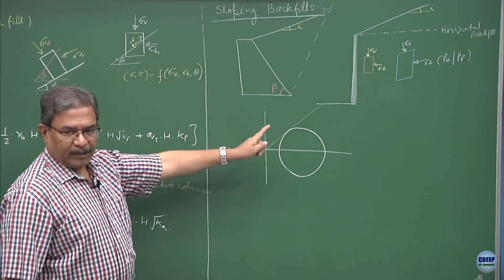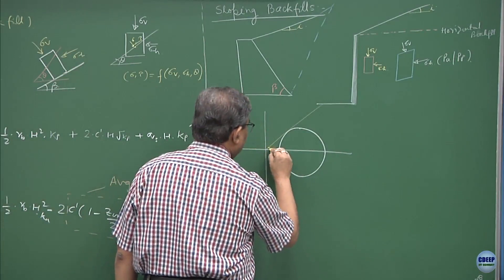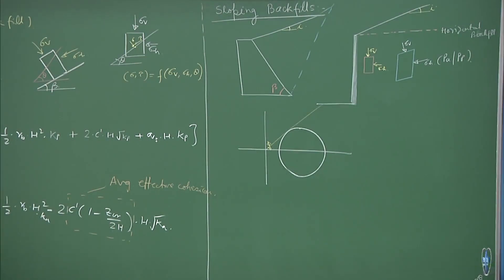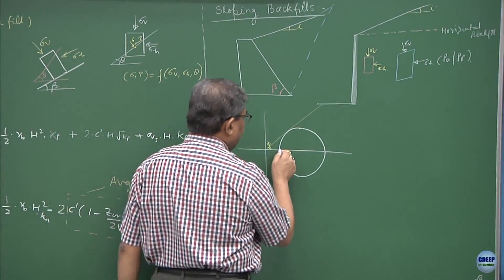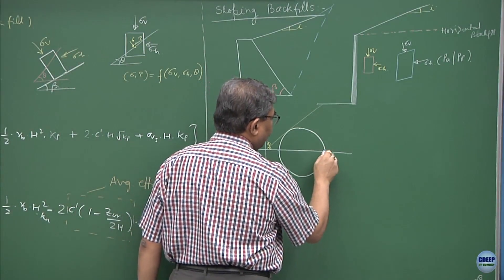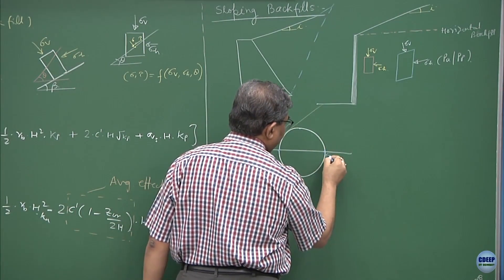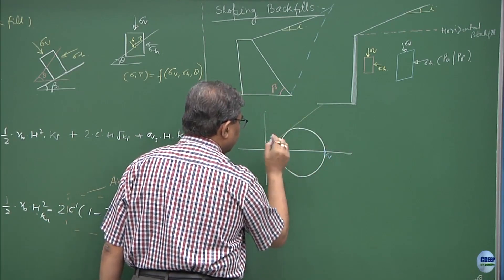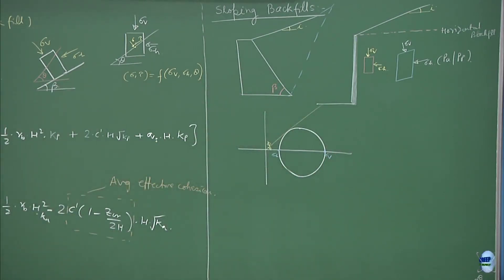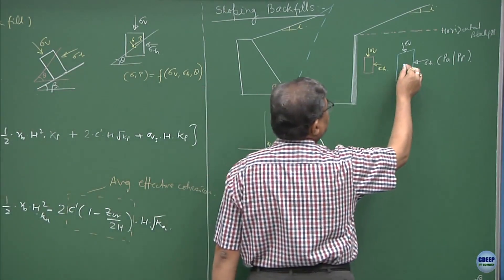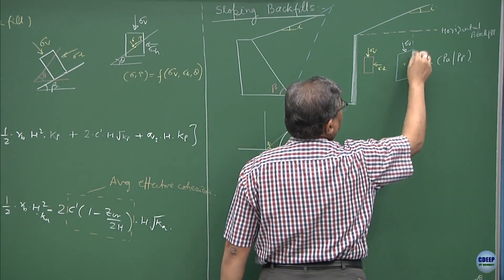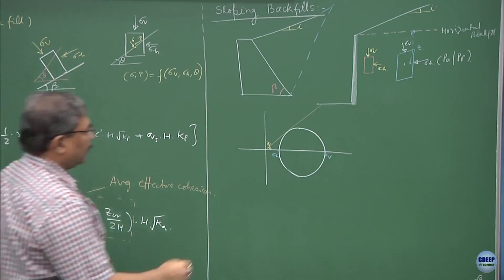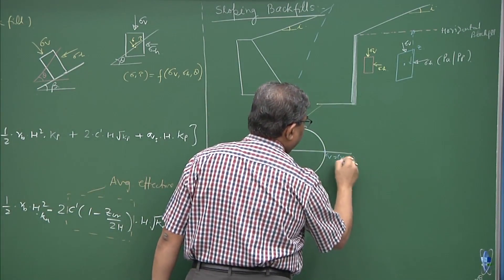This becomes the failure envelope, phi angle. What is the state of sigma_1, sigma_3? This is sigma_3, this is sigma_1, that means this is sigma_v and this is sigma_h. And sigma_v is, if this is the depth of a point from the horizontal backfill at a depth of z, this was equal to gamma into z.